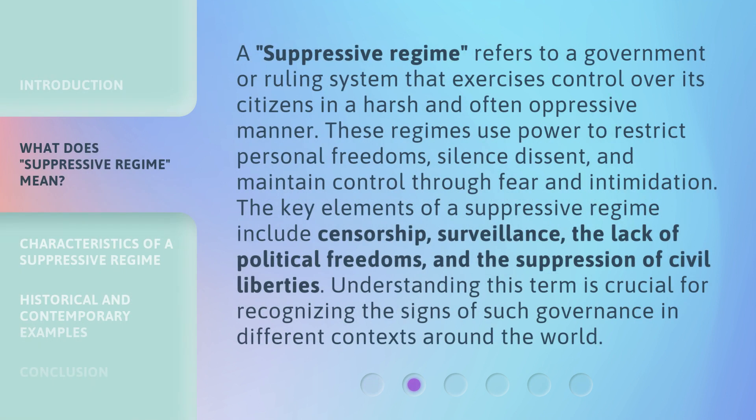A suppressive regime refers to a government or ruling system that exercises control over its citizens in a harsh and often oppressive manner. These regimes use power to restrict personal freedoms, silence dissent, and maintain control through fear and intimidation. The key elements include censorship, surveillance, the lack of political freedoms, and the suppression of civil liberties. Understanding this term is crucial for recognizing the signs of such governance in different contexts around the world.